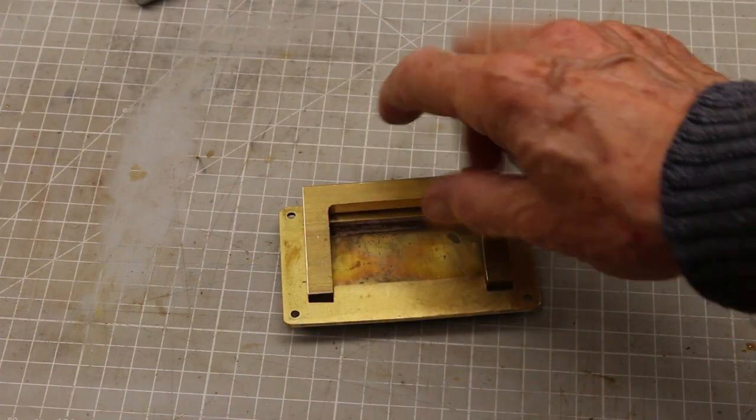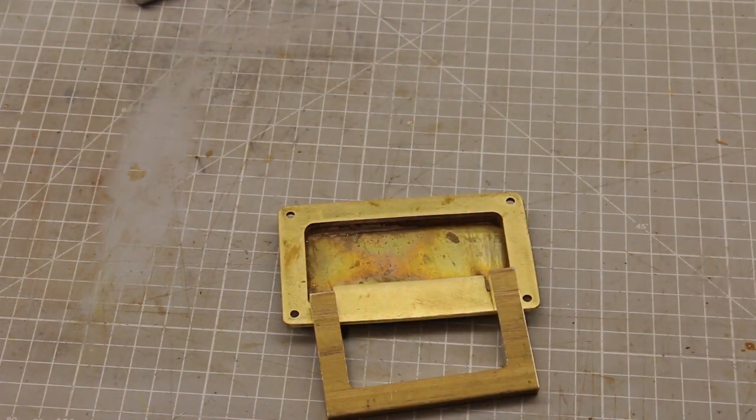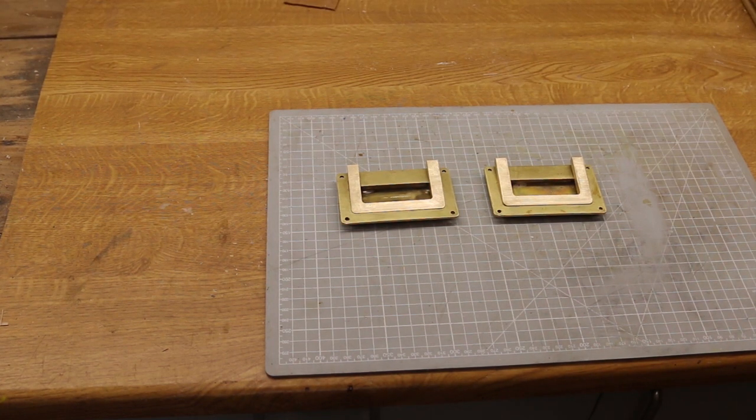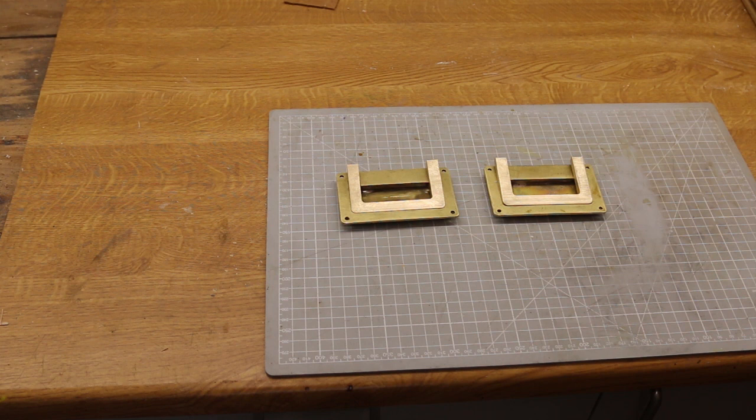The next job was to round the bottom of the handle. To match the curve on the plate. And then filed the outer corners round. And polished them up. So they fit into the slots.